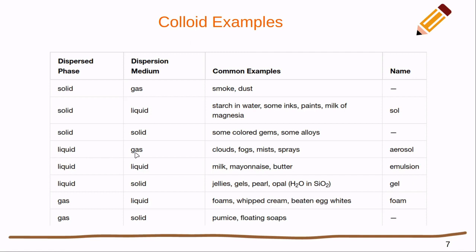A liquid dispersed in a gas gives us clouds, fogs, mists, and different sprays. A liquid dispersed in a liquid includes milk, mayonnaise, or butter — milk is a suspension of fat and water, both liquids, and so are mayonnaise and butter.